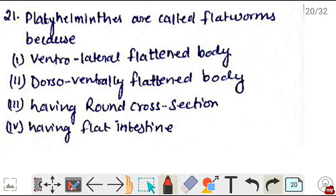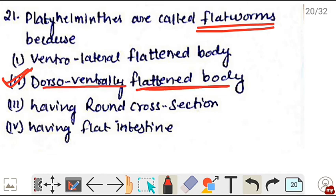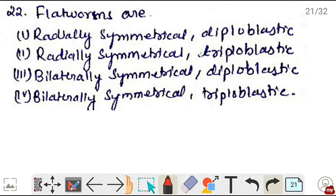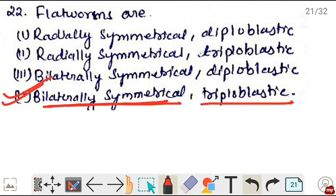Platyhelminthes are called flatworms because - the body of Platyhelminthes is flattened from both front and back, that is dorsoventrally flattened. That's why they're called flatworms. Correct is option 2, that they have dorsoventrally flattened body. Next, flatworms are - flatworms or Platyhelminthes are the first phylum in which bilaterally symmetrical organisms arose and triploblastic arrangement or organization was present. Correct is option 4, bilaterally symmetrical and triploblastic.